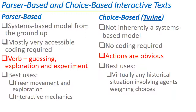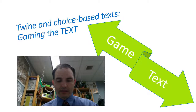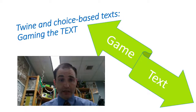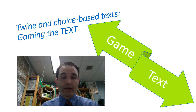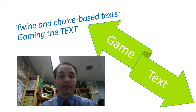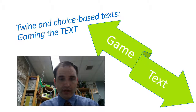Choice-based texts like Twine are best suited for virtually any historical situation involving agents that are weighing choices and making decisions. Whether it's a choice-based text or a parser-based text, what you find with these interactive texts is a combination of game and text — you get the precision and clarity and focus of text, and even the ability to exclude areas of your historical treatment that you don't want to deal with. But you also get the interactivity, the choice-making, and the dynamic elements of the game. And so interactive texts can be a really great medium for creating all sorts of histories at all levels.